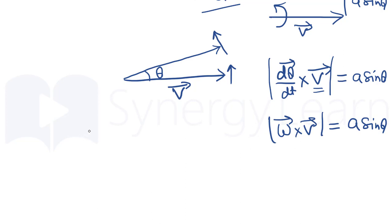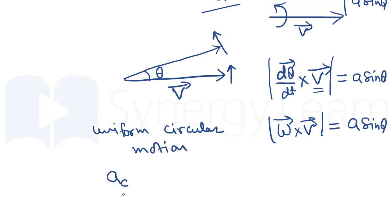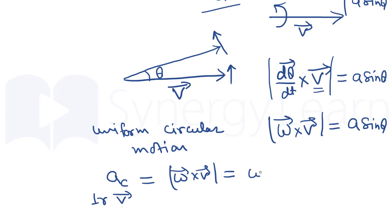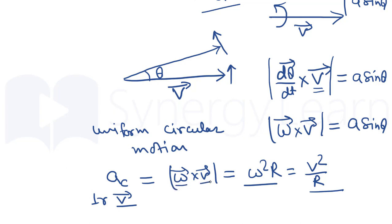This is the reason why in uniform circular motion, the centripetal acceleration — which we know is perpendicular to velocity — is equal to omega cross V, with magnitude equal to omega squared R or V squared by R. The centripetal acceleration brings about a change in direction of the velocity, and therefore is perpendicular to it. The quantity which brings change in direction will always be written as omega cross the vector.